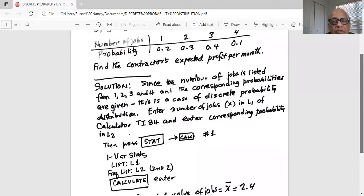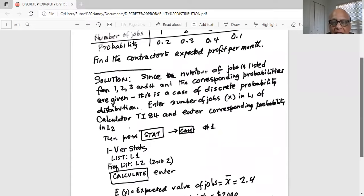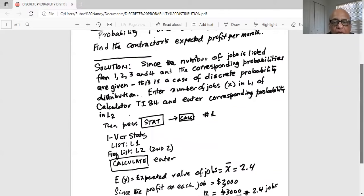Enter the number of jobs x in L1 of calculator TI-84 and enter corresponding probability values in L2. Then press stat and then highlight calc and then number one. We get one-var stats, list first line would be L1. If your second line is empty, which is frequency list, we need to put L2 there, which is second and two. And then we scroll down to calculate and hit enter.